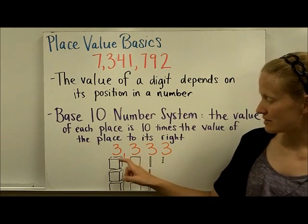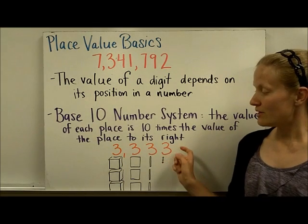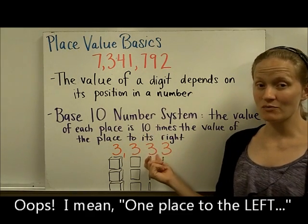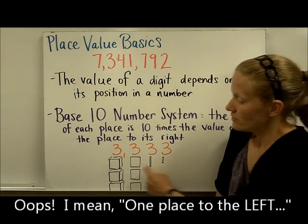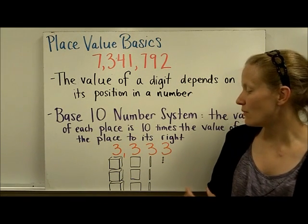So let's look at an example and see what that means. In this number, 3,333, we see that each time we go one place to the right, that 3 is worth 10 times more than the one before it. And I've also modeled the number using base 10 blocks as we will be doing in class.